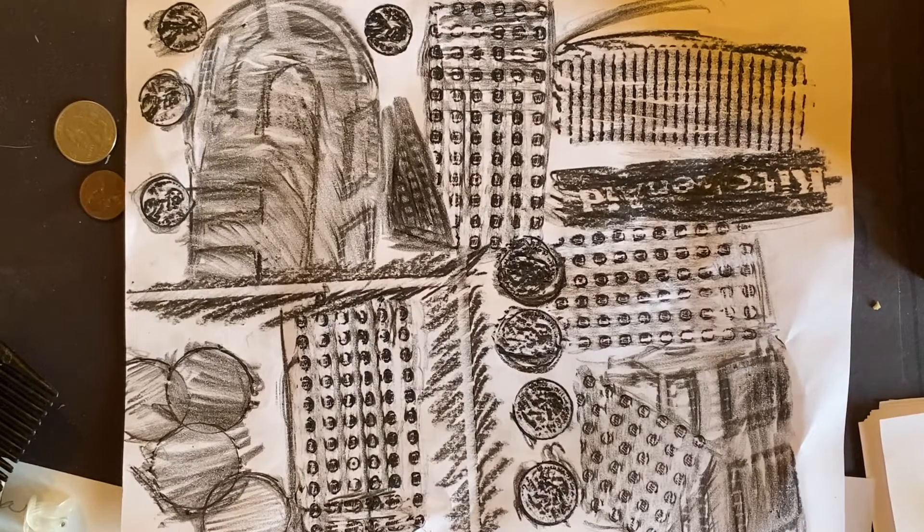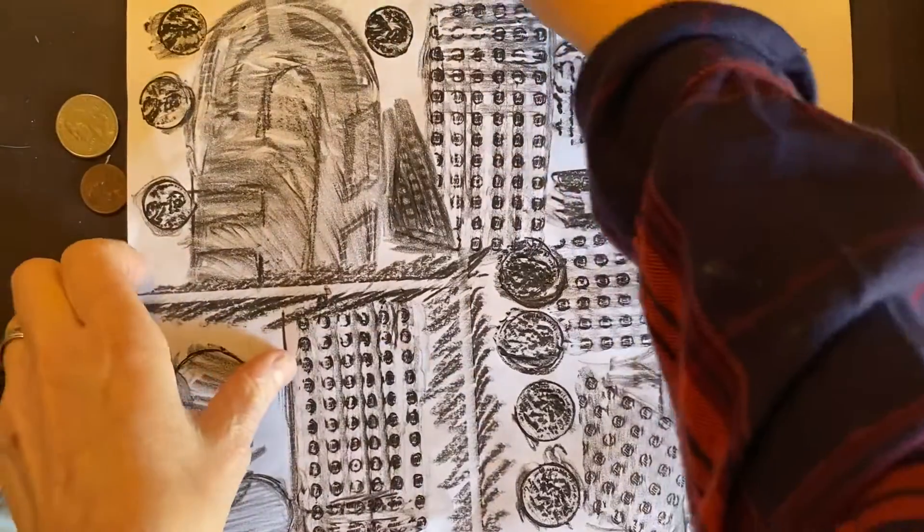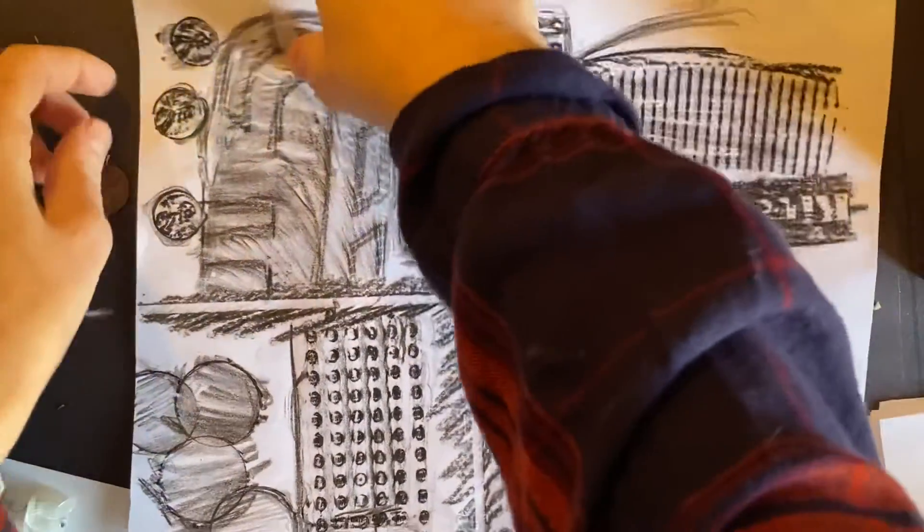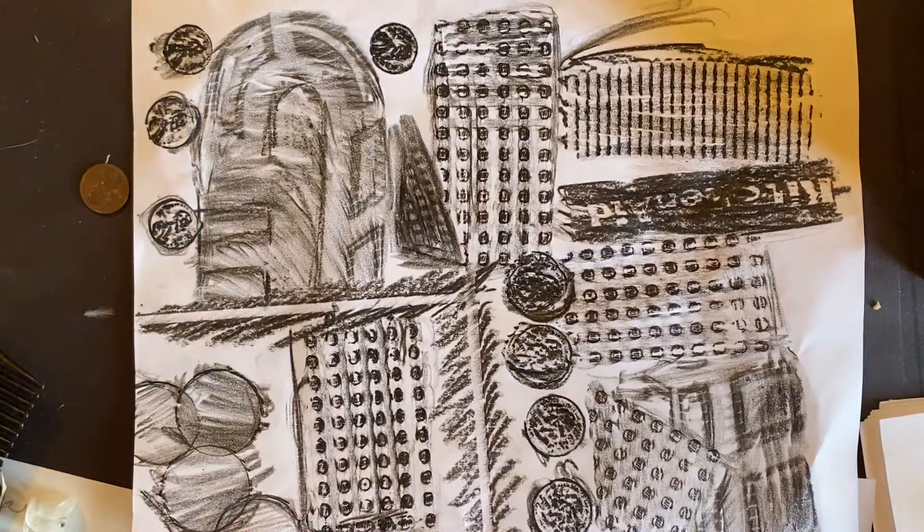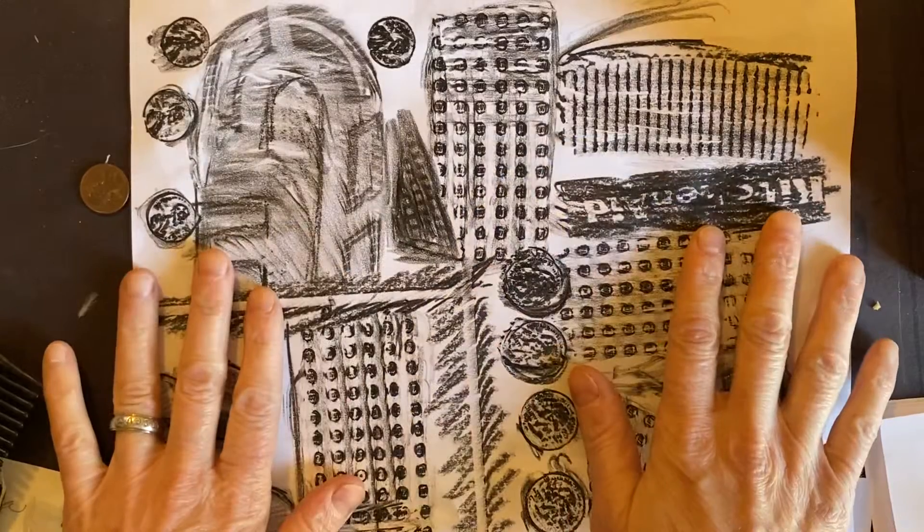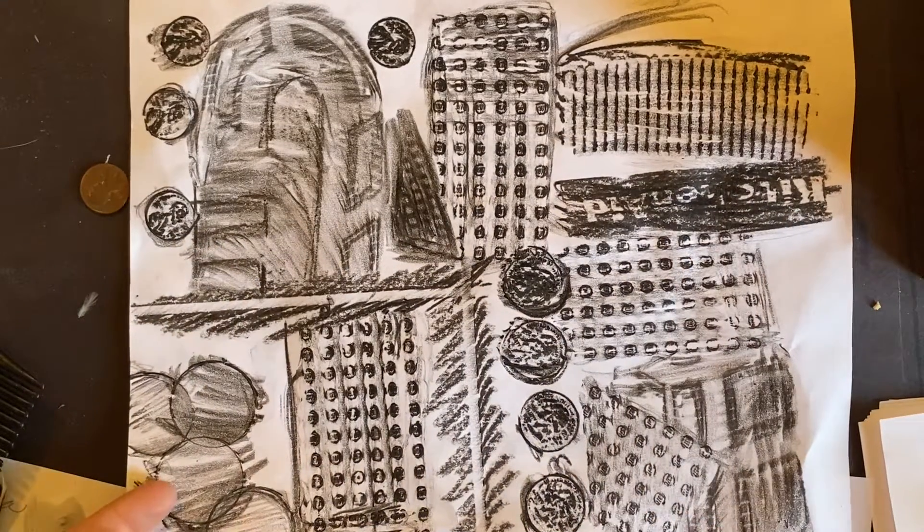A texture rubbing is created by taking different found objects and putting it underneath the paper and rubbing the paper on top with a pencil or crayon. We are going to create different designs or even different pictures using some of the things that you find around you.